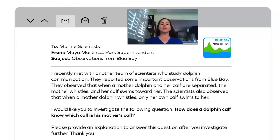I recently met with another team of scientists who study dolphin communication. They reported some important observations from Blue Bay. They observed that when a mother dolphin and her calf are separated, the mother whistles and her calf swims towards her. The scientists also observed that when a mother dolphin whistles, only her calf swims to her. I would like you to investigate the following question. How does a dolphin calf know which call is his mother's call? Please provide an explanation to answer this question after you investigate further. Thank you.